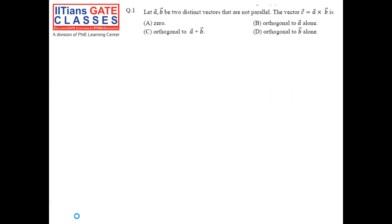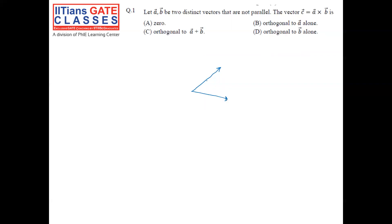Coming towards the first question: let a-bar and b-bar be two distinct vectors that are non-parallel. Then the vector c-bar, which is a-bar cross b-bar — it's the cross product of the two vectors. We know that if we have one vector and another vector and they are non-parallel, they'll intersect at some point, and their cross product is always perpendicular to both vectors a-bar and b-bar. So option B and D are wrong, option A is also wrong. Option C is correct: c-bar is orthogonal to a-bar plus b-bar because it is orthogonal to both a-bar and b-bar.